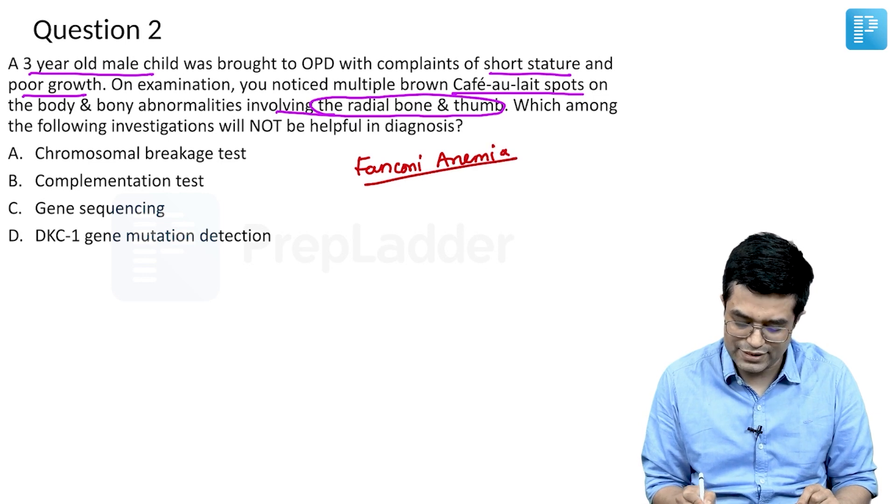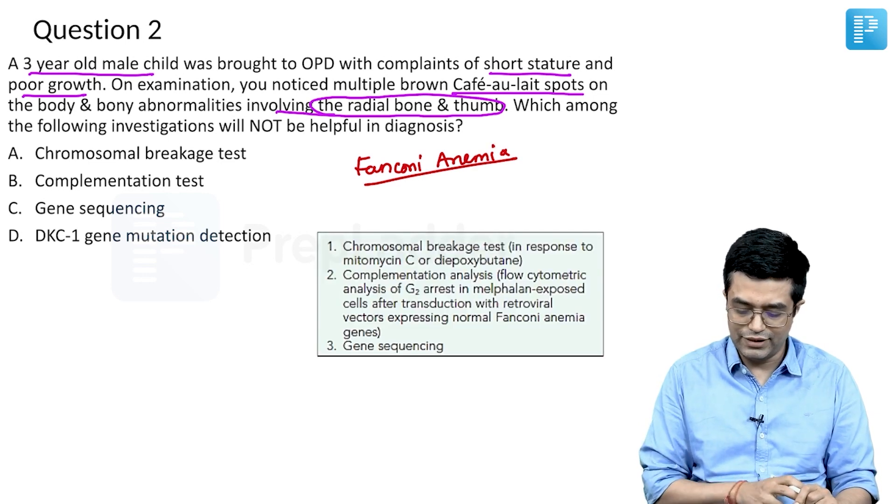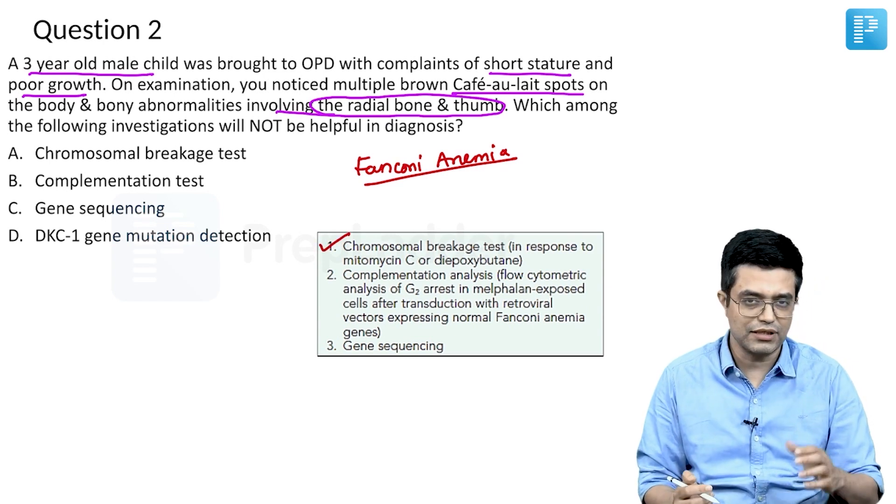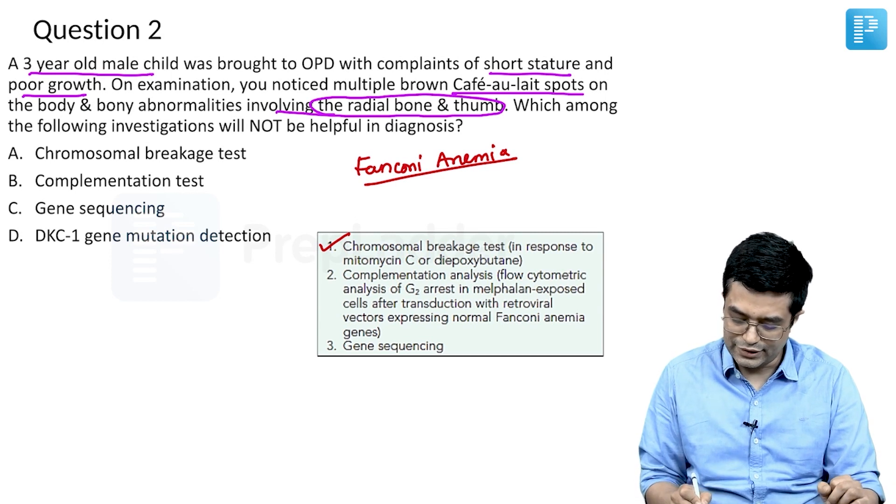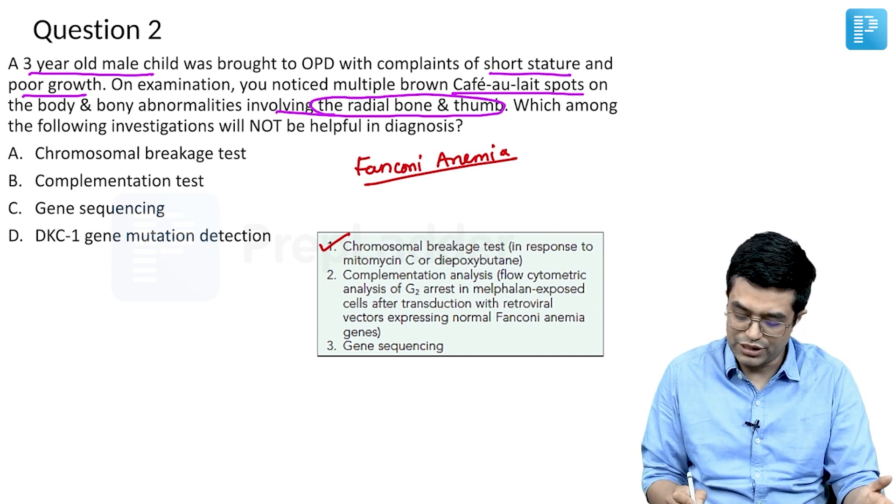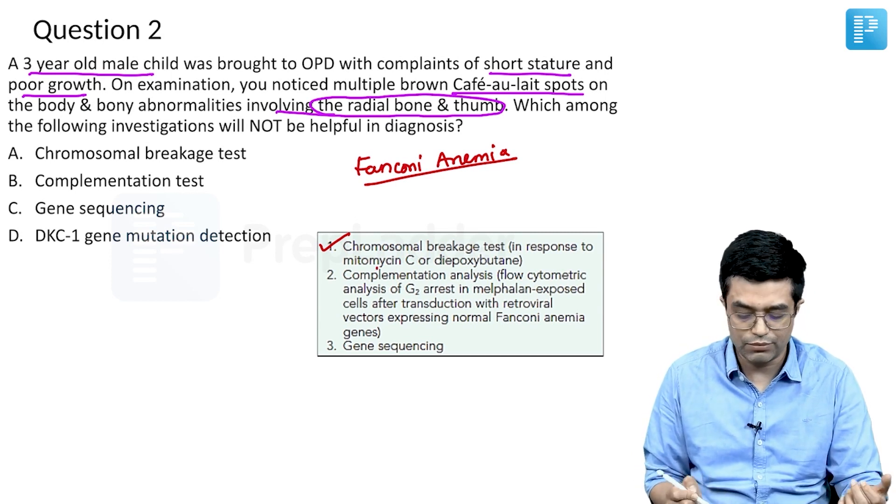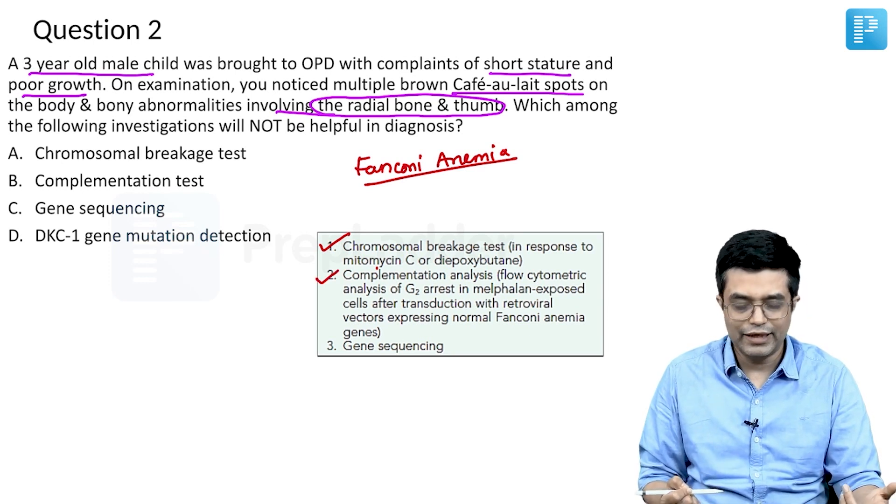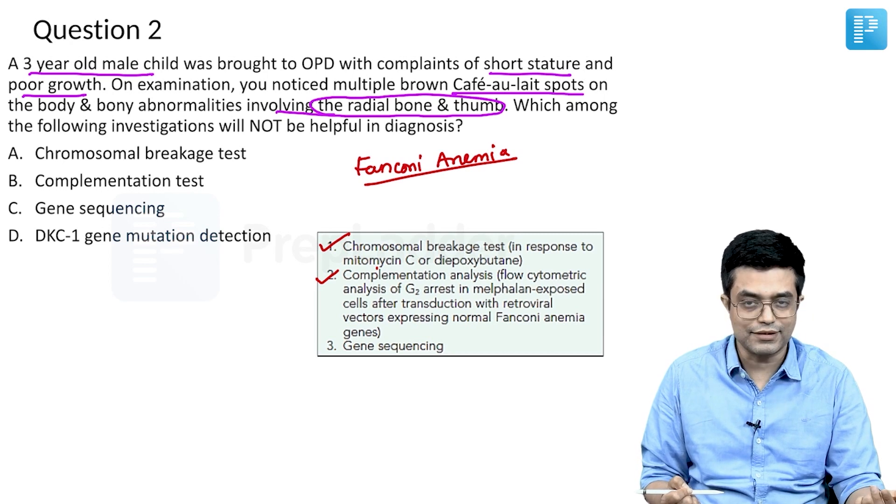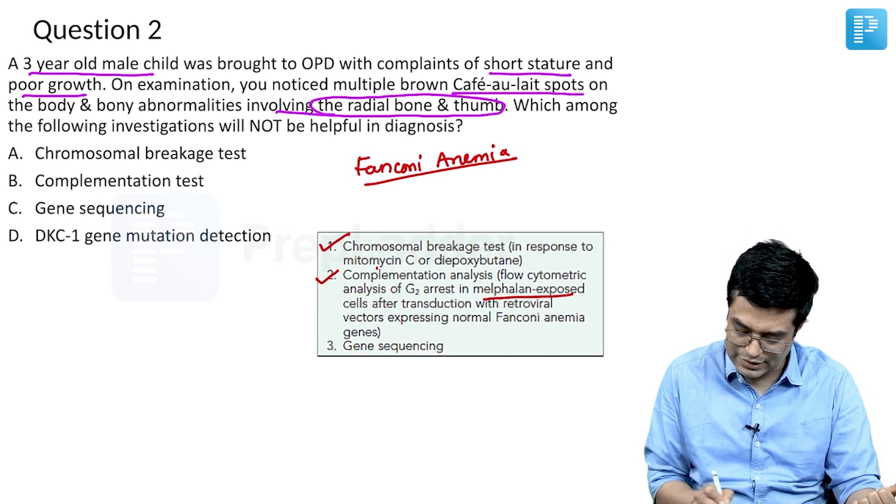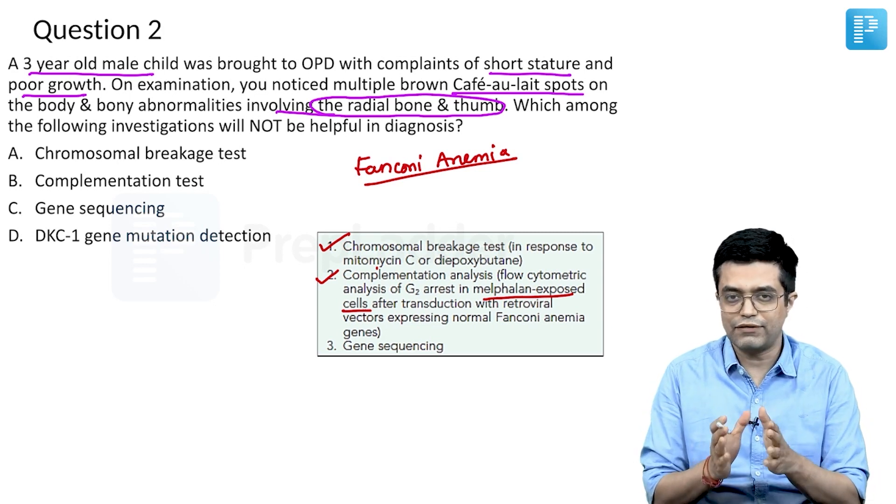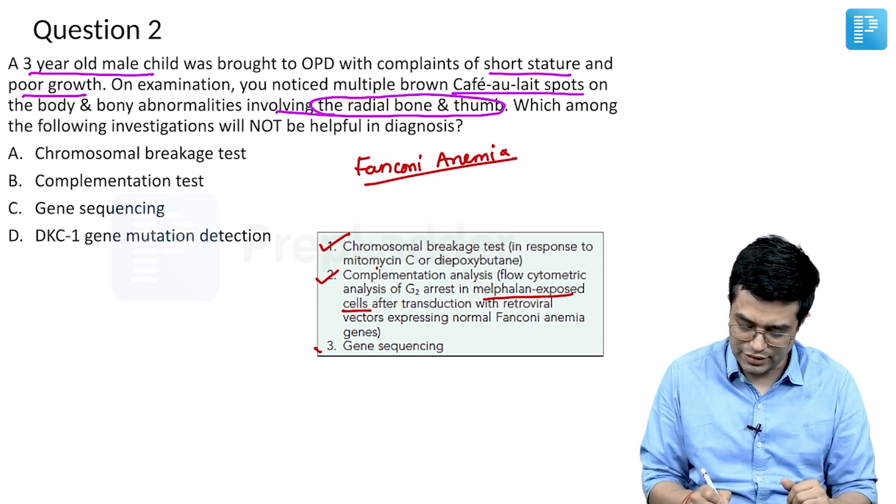If you're suspecting Fanconi Anemia, there are three types of tests: First is chromosome breakage studies (investigation of choice) checking for chromosome breakage in response to mitomycin C or diepoxybutane. Second is complementation analysis where G2RS analysis is done in melphalan-exposed cells after transduction with viral vectors expressing Fanconi genes. Third is gene sequencing.